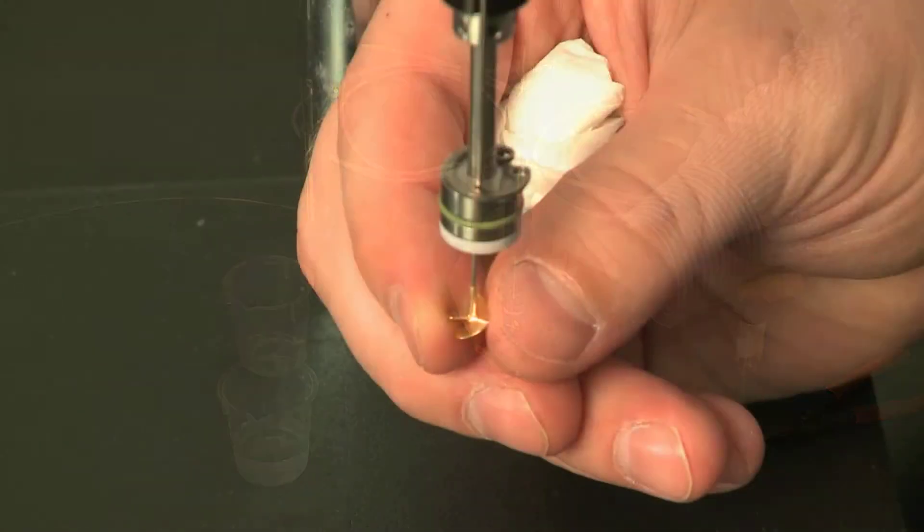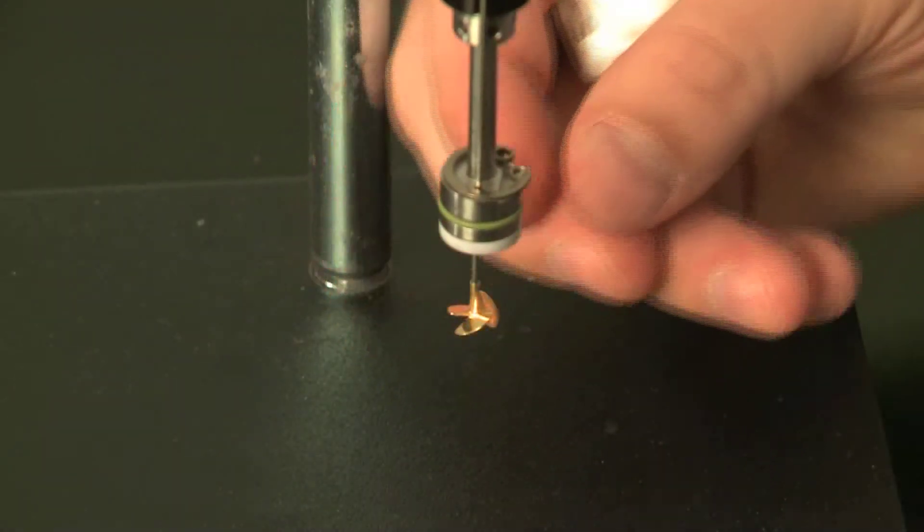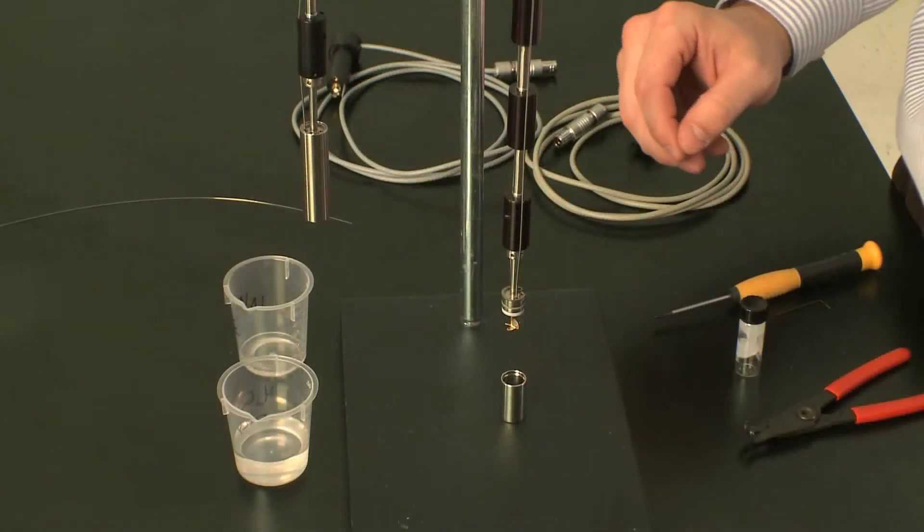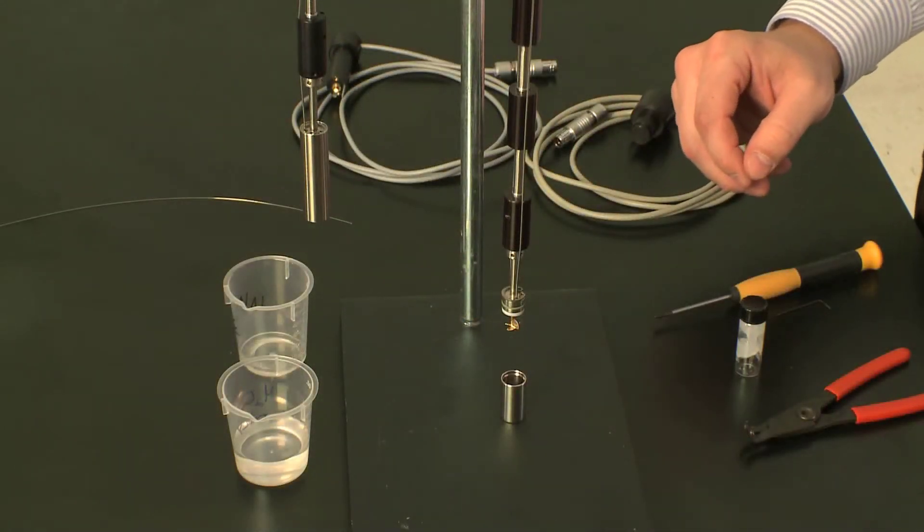Then I'm going to move it up about 1 millimeter or so, so I know the stirrer isn't rubbing on the bottom of the ampule during the experiment.